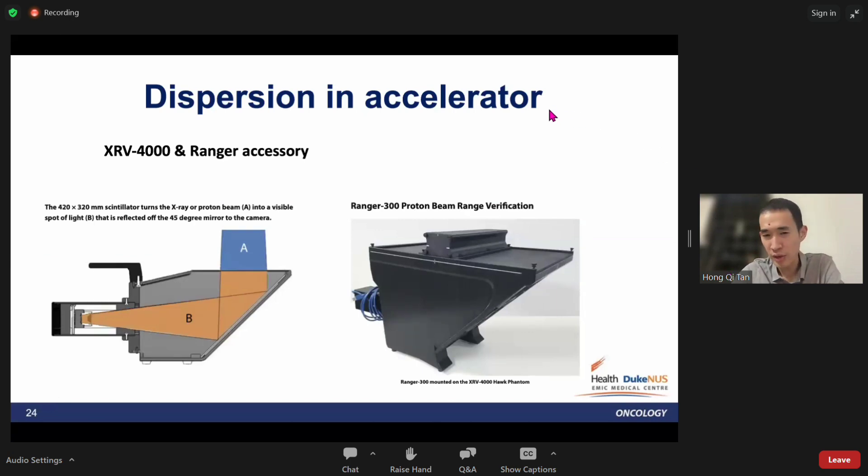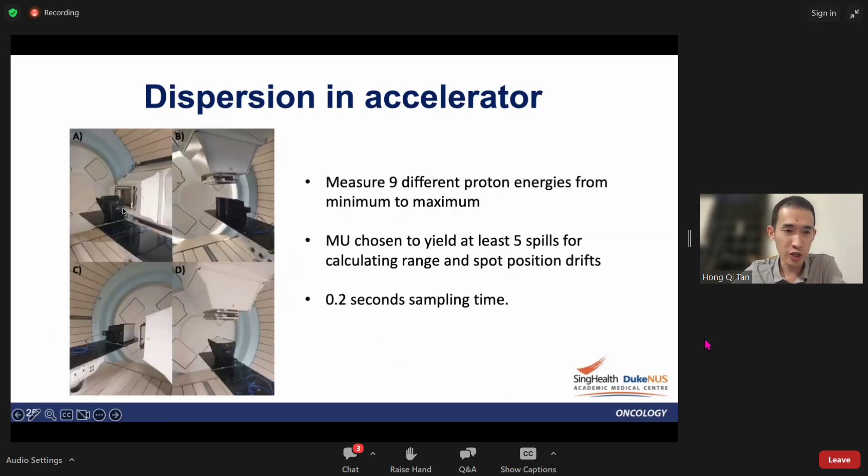These are the instruments that we are using to measure the range drift and the spot position drift at the ISO center. It's an SRE 4000 scintillation detector with a mirror and a CMOS camera. It has a nice accessory known as a Ranger 300, which is an entire scintillation block that can do time-lapse proton range measurements. We measured at gantry 3 90 degrees and 0 degrees.